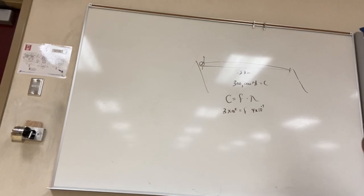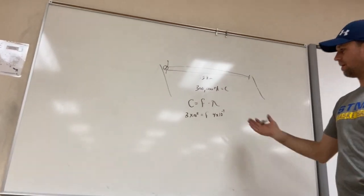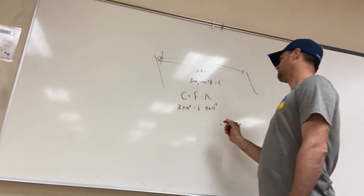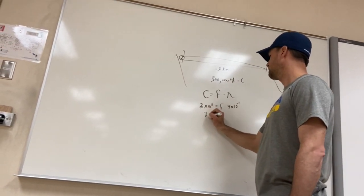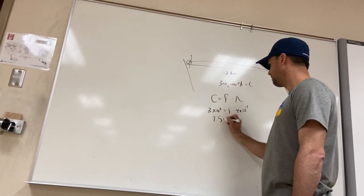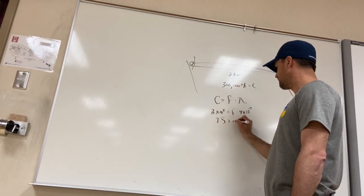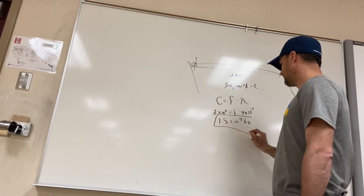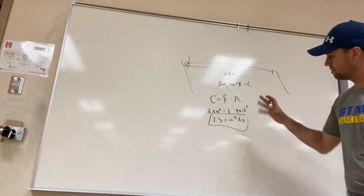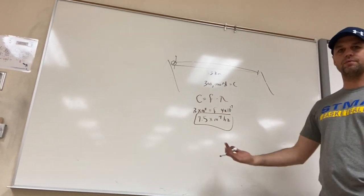So if you take 3 times 10 to the 8 and you divide it by 4 times 10 to the negative 7, I think you're going to get something like 7.5 times 10 to the 14 hertz, which is about what violet light's frequency is. So that's how you solve for the frequency of light with different equations.